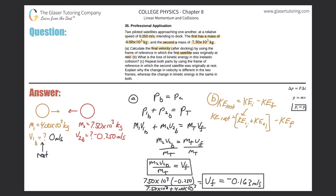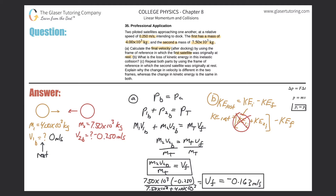Since kinetic energy depends on velocity, and the first satellite's initial velocity is zero, its initial kinetic energy is also zero. So KE lost equals one-half times m2 times v2b squared, minus one-half times the total mass times the final velocity squared - where the final state has both objects stuck together.